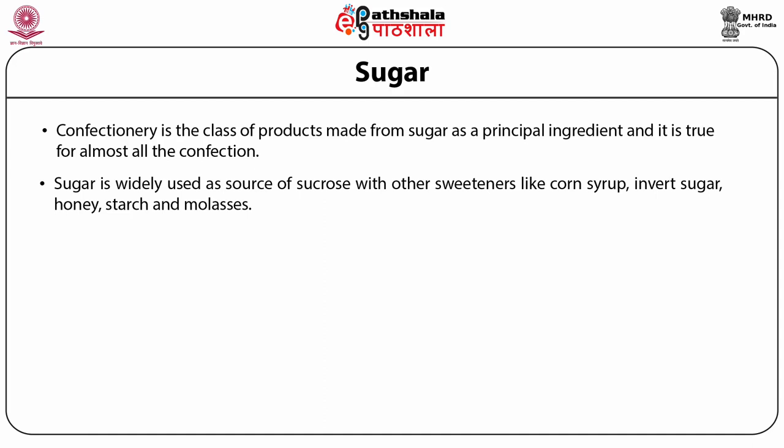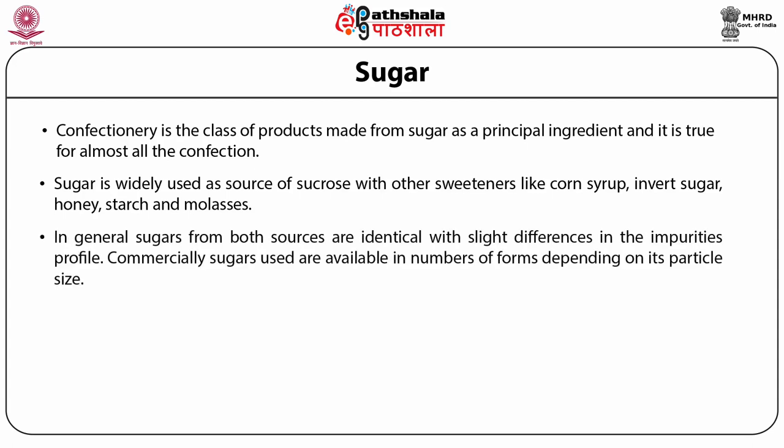Sugar is widely used as a source of sucrose along with other sweeteners like corn syrup, invert sugar, honey, starch, and molasses. Sugar is prepared either from cane sugar or beet sugar. Commercially, sugar from both sources are identical with slight differences in the impurity profile. Commercially, sugars are available in a number of forms depending on particle size.